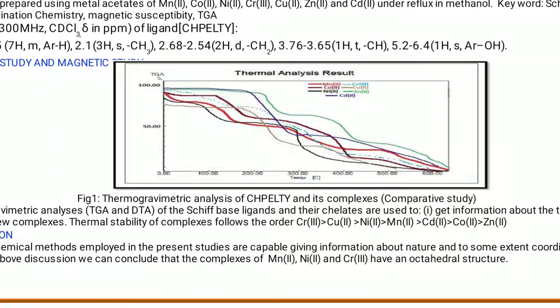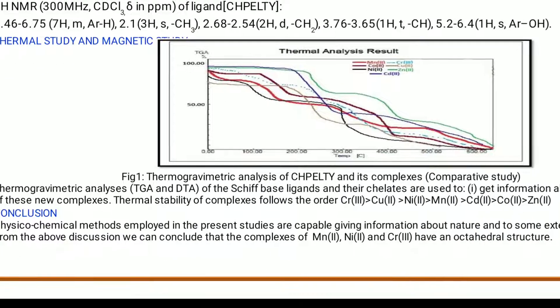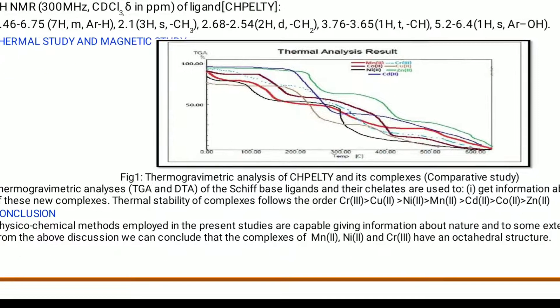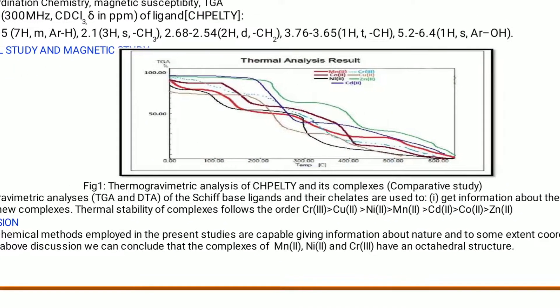Thermogravimetric analysis, TGA, along with DTA — differential thermal analysis — of the DHPEAHP ligand and their chelates are used to get information about the thermal stability of these new complexes, and finally we obtain the thermal stability data for the complexes.